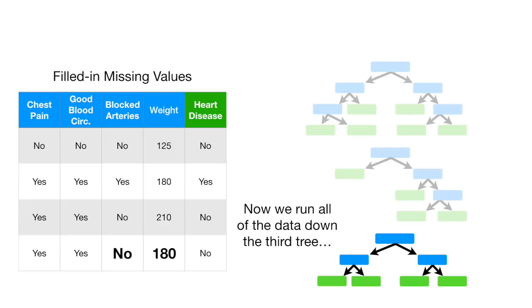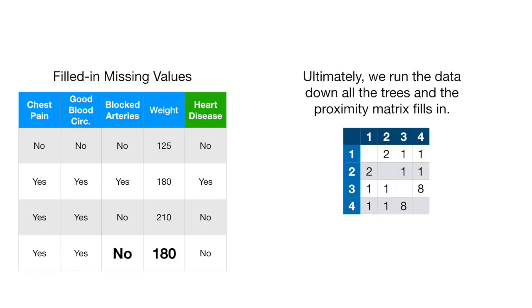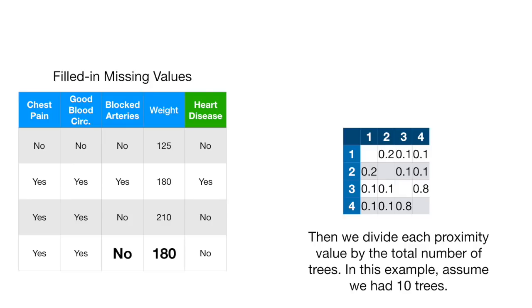Now we run all of the data down the third tree. And here's the updated proximity matrix. Only samples 3 and 4 ended up in the same leaf node. Ultimately, we run the data down all the trees and the proximity matrix fills in. Then we divide each proximity value by the total number of trees. In this example, assume we had 10 trees.